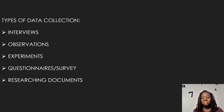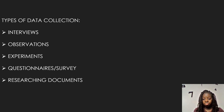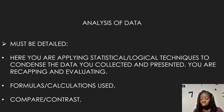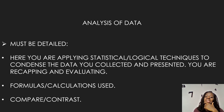The types of data collection include interviews, observations, experiments, questionnaires or surveys, and researching documents. The most common ones are usually experiments or questionnaires and surveys. When thinking of your project title, consider what method you can actually use to accomplish it. If you can't think of a method, your project title makes no sense — think of something else.